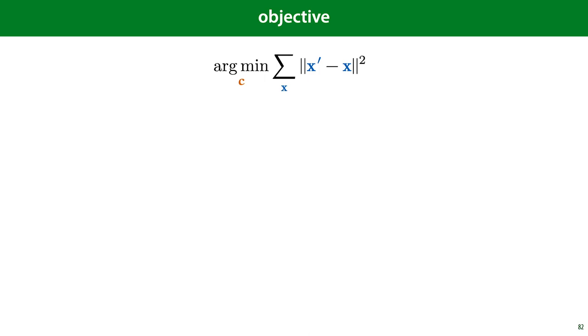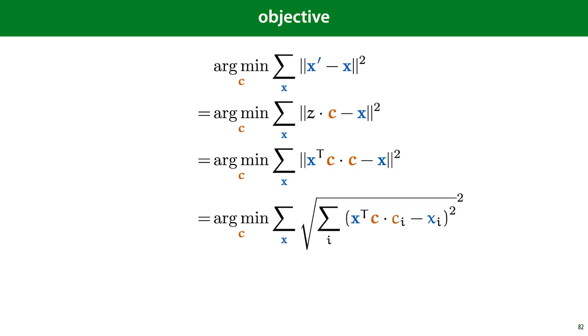To find c, we will simply state our goal as an optimization objective. We want to find the vector c for which the squared distance between the data and the reconstructed data is minimized. Note that we're using the square of the distance between x prime and x. We'll first fill in the definition of the reconstruction, which is z times c, and then the definition of the optimal z, which is the dot product of x with c. Note that the center dot represents a simple multiplication of a scalar by a vector and not a dot product. We can fill in the definition of the Euclidean distance and note that the square root cancels out against the square in our optimization objective so that we are left with a sum of the squares over every dimension i in every instance x. This leaves us with a simple objective to which we can apply any search algorithm like gradient descent.